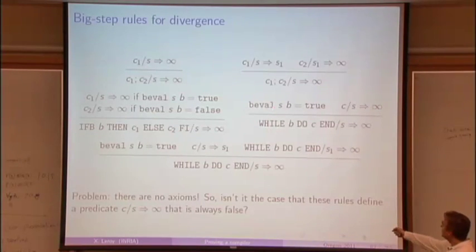A while can diverge in two ways. The condition has to be true, but maybe the body will diverge the first time, so we'll never get to re-executing the loop. Or the body will terminate, but then it's the next iteration of the loop that diverges. So I claim there are no other possibilities. And so those rules make sense.